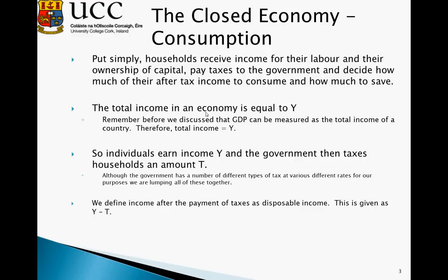Individuals earn Y, and then the government taxes this income. Although the government has a number of different types of tax at various rates, for our purposes we are going to consider tax as being equal to T — lumping them all together. We can therefore define income after the payment of tax as disposable income, which is the amount of income people can do with as they wish. When initially receiving income, tax is first deducted, and then consumption and saving choices are made.